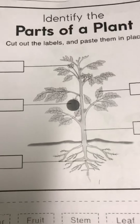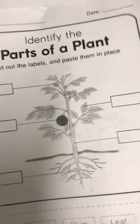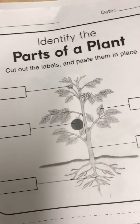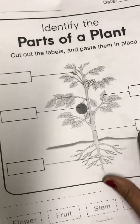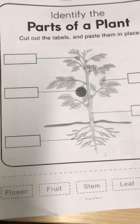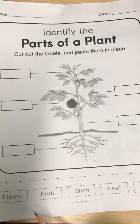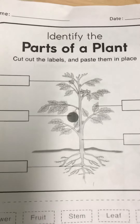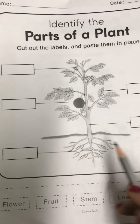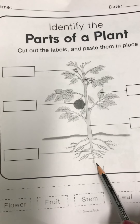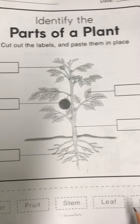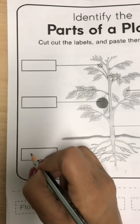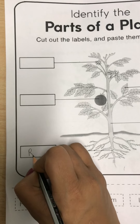Now we will do the worksheet related to it. One exercise in your book we have already done. I will share this worksheet on the group which you have to do. The options are given at the bottom: flower, fruit, stem, leaf, and root. You have to write down the answers here. This is the underground part — this is the root. You have to write down: root.